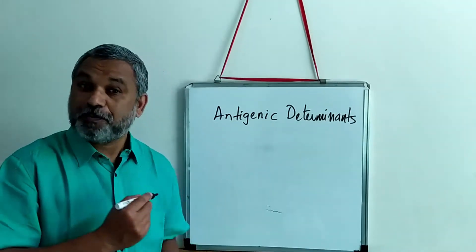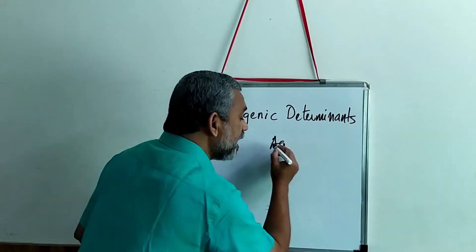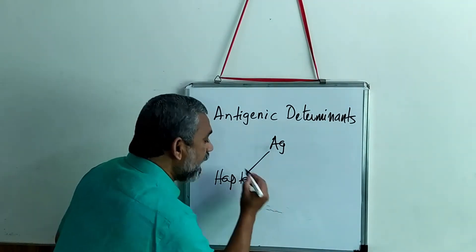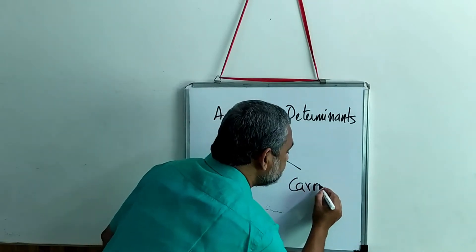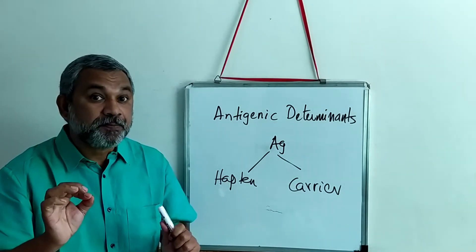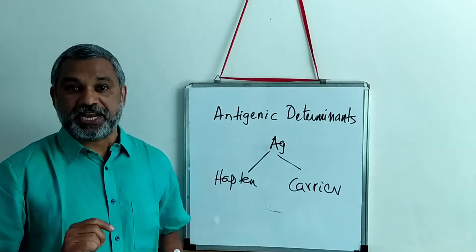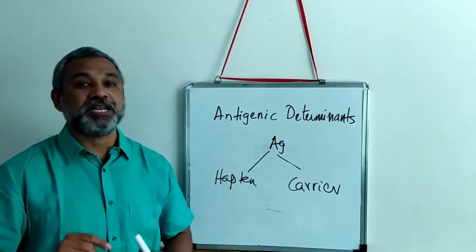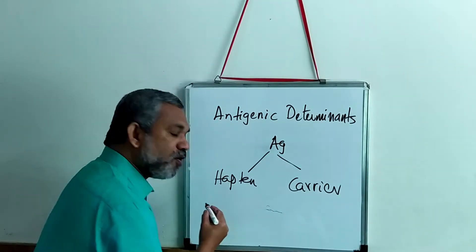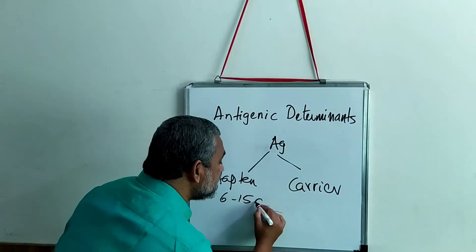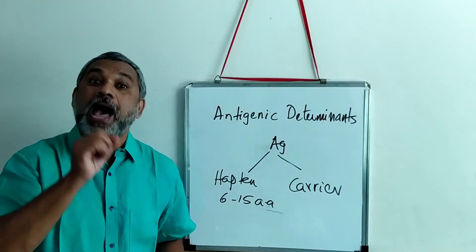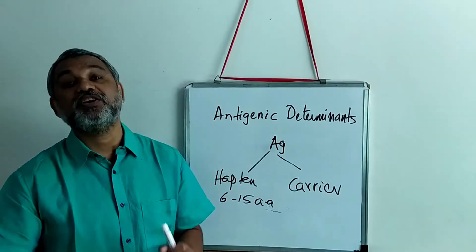If you look at an antigen, it has two portions — two regions. One region is what we call a hapten, and the other region is what we call a carrier. A hapten is that small portion of an antigen which is immunogenic — it has the capacity to induce an immune response. It may be a region of about 6 to 15 amino acids long. That is a hapten, but haptens are normally associated with a carrier.